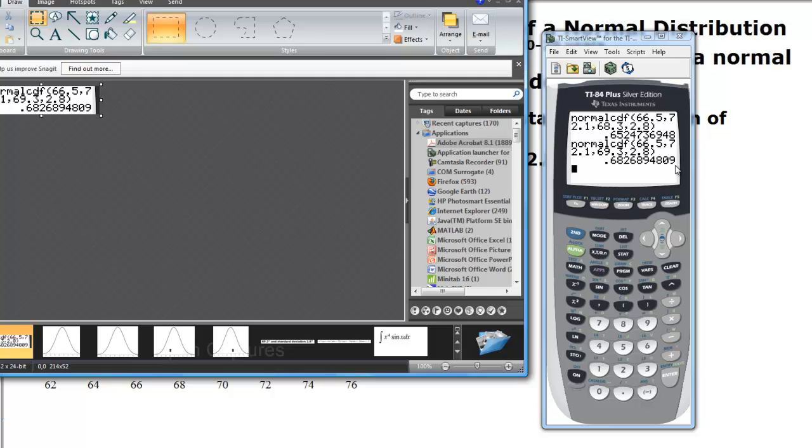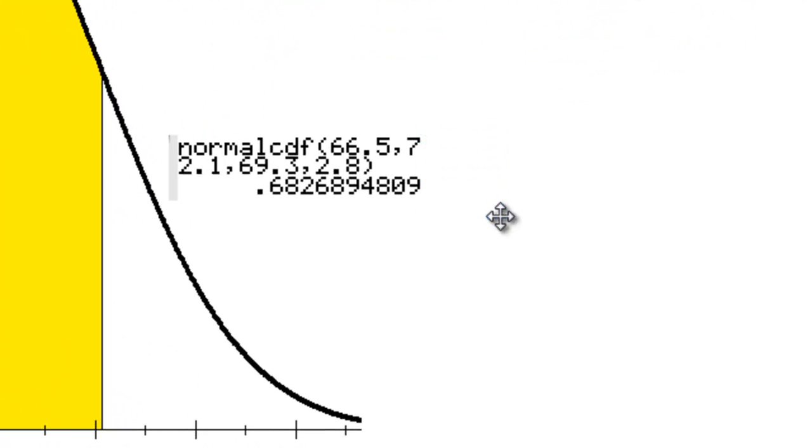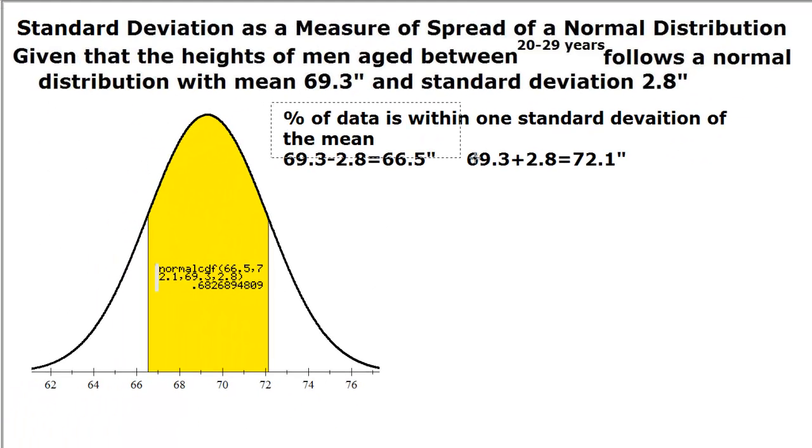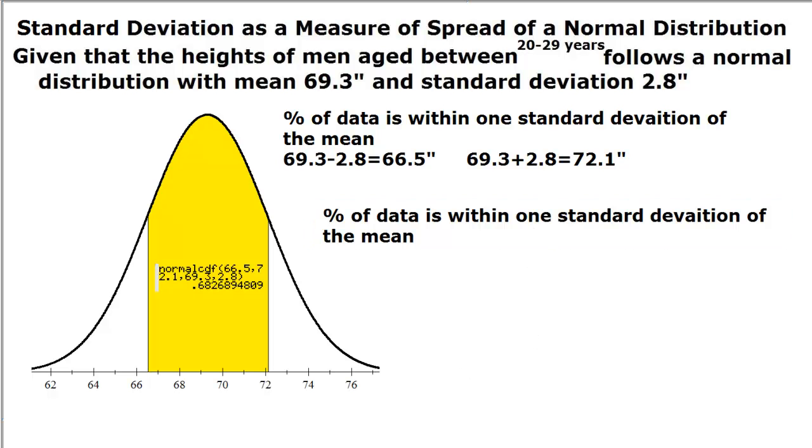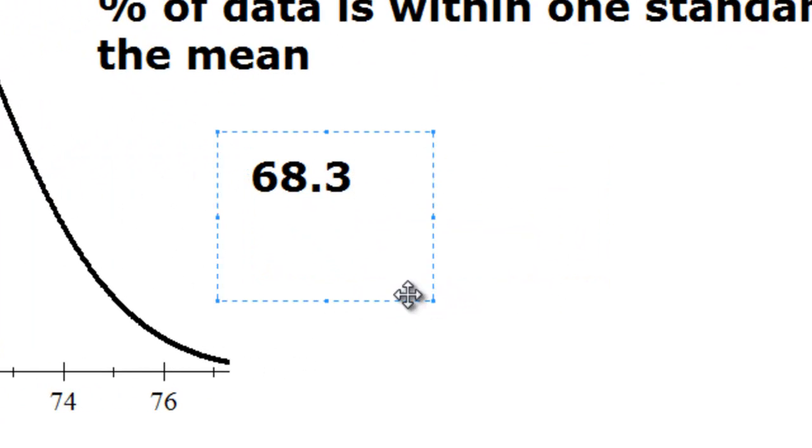So what we have then is that this area is approximately 68.3%, because in here we have it as a proportion. So we can conclude that about 68.3% of the data is within one standard deviation of the mean for a normal distribution.